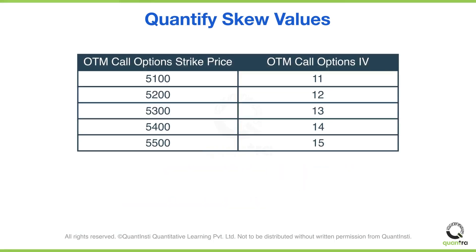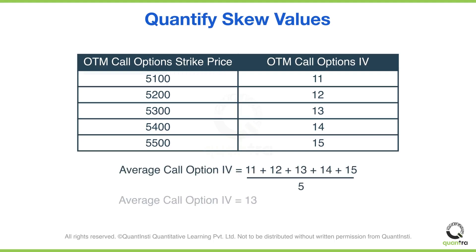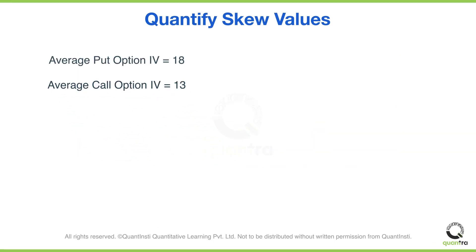If you take the average put option IV, it will be 18. Similarly, you will calculate the average of OTM call options IV for a set of OTM call options as shown on the screen. The average value is 13. You have now calculated the average put options IV and the average call options IV.